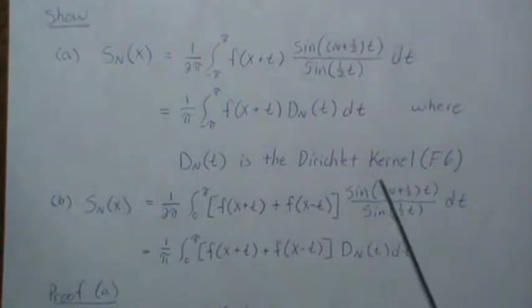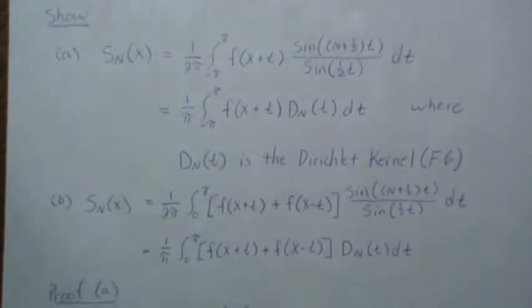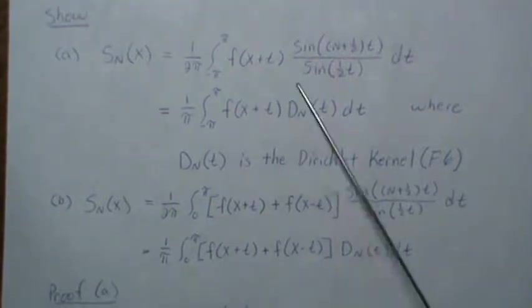In part B, we're going to derive the partial sum from zero to π, which is going to be this. And if you take that two into this, that's the Dirichlet series.